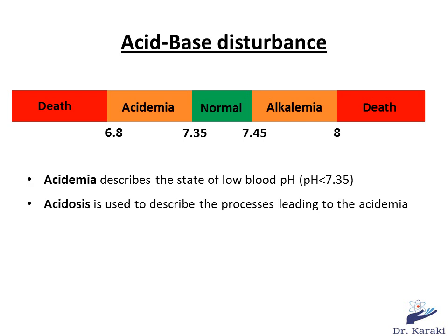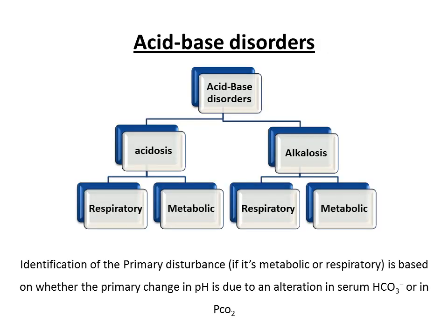The normal range of blood pH is between 7.35 and 7.45. If the pH is lower than 7.35, it's an acidemia. If it's higher than 7.45, it's an alkalemia. Acidosis and alkalosis are used to describe the processes leading to acidemia and alkalemia respectively. Acid-base disorders are pathologic changes in the partial pressure of carbon dioxide or serum bicarbonate that typically produce an abnormal arterial pH.